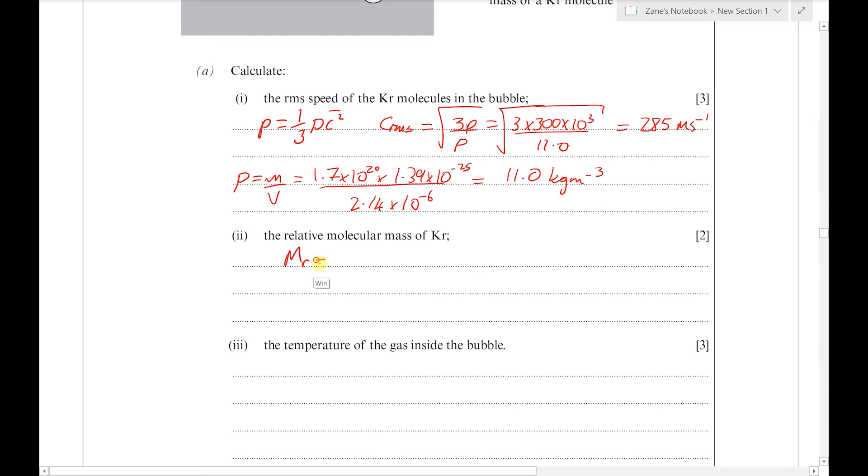So M_r is the mass of the molecule, 1.39 × 10⁻²⁵, divided by 1.66 × 10⁻²⁷, the value of 1u given in the data book. Putting that into the calculator, we get 83.7 or 84. Remember that M_r has no unit.